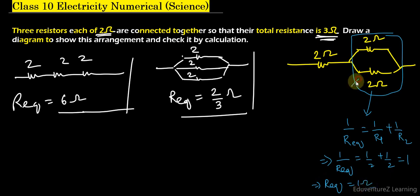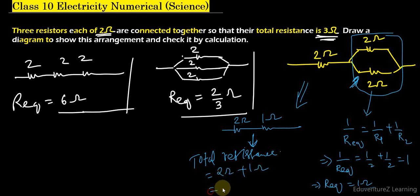So we can replace both of them with a resistance of 1 ohm, and the diagram becomes 2 ohm and 1 ohm. Now we can see that both are in series. So the total resistance is the sum of both resistors: 2 ohm plus 1 ohm, which gives 3 ohms.